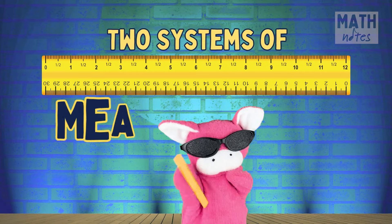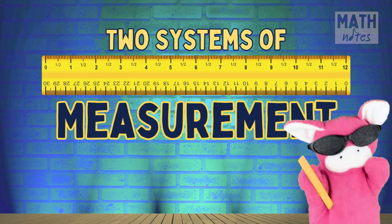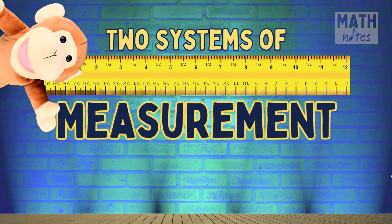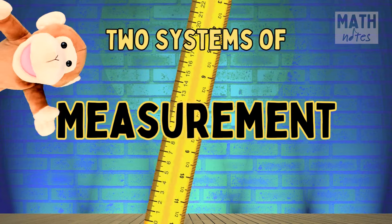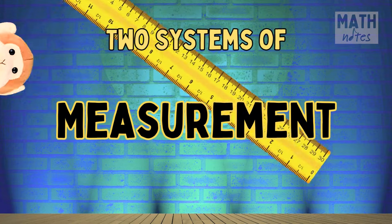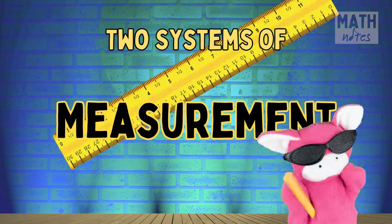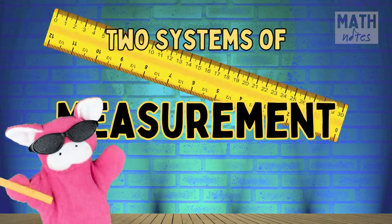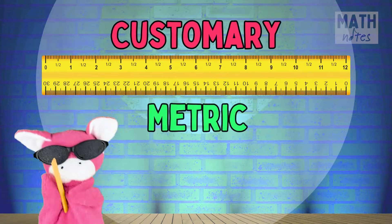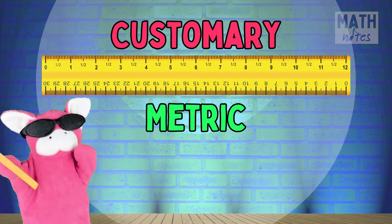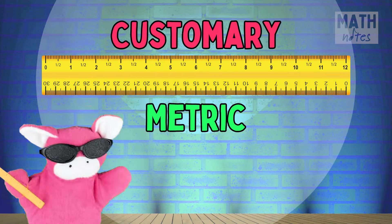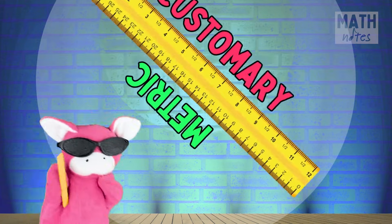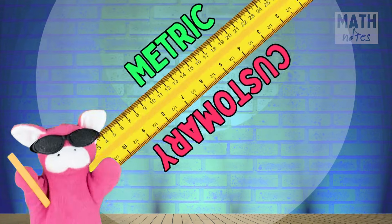There are two systems of measurement. There are two systems of measurement. Customary and metric.